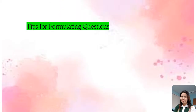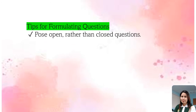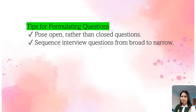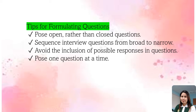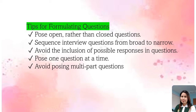Here are some tips in formulating questions. First, pose open rather than closed questions — it should be clear and focused, meaning the question should clearly state what the writer needs to do. Next, sequence interview questions from broad to narrow, and your question shouldn't be too broad and not too narrow — it should have an appropriate scope. Also, avoid the inclusion of possible responses in questions, pose one question at a time, and your question should not be too easy or too difficult to answer. Lastly, avoid posing multi-part questions.